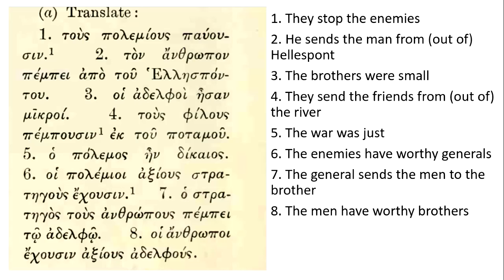The first sentence, 'tous polemious pausin,' I would translate as 'they stop the enemies.' There's no explicit subject in this sentence, but we know we should translate it as a generic 'they' because 'pausin' has a plural ending — kind of like how in Sanskrit the plural ending is 'anti.' We see something like that with that '-zin' ending telling us this is third person plural. The noun contained explicitly within the sentence is not the subject because we see that '-us' ending both at the end of 'polemiois' and the definite article — it's 'tous' rather than some nominative form. So we translate this as 'they stop the enemies.'